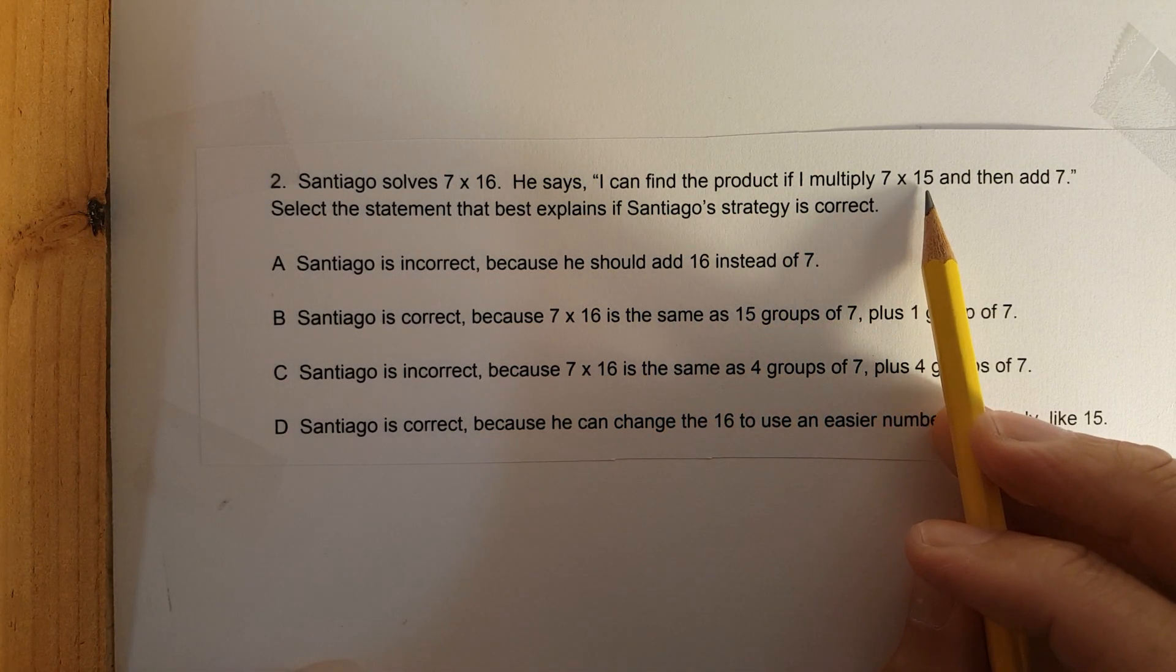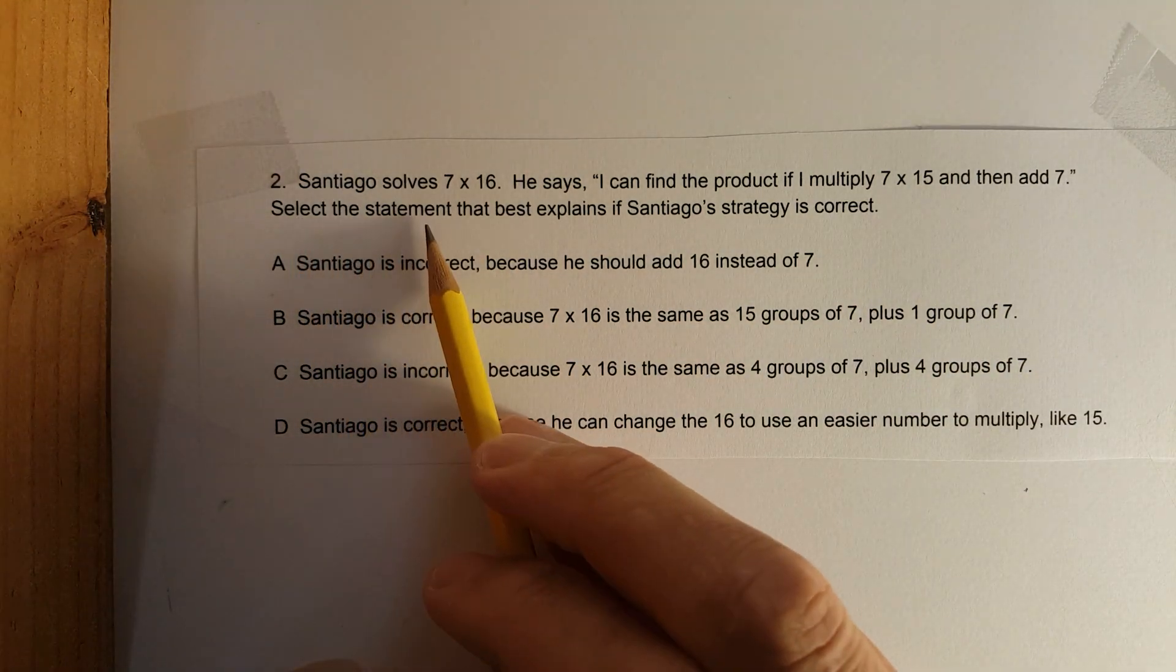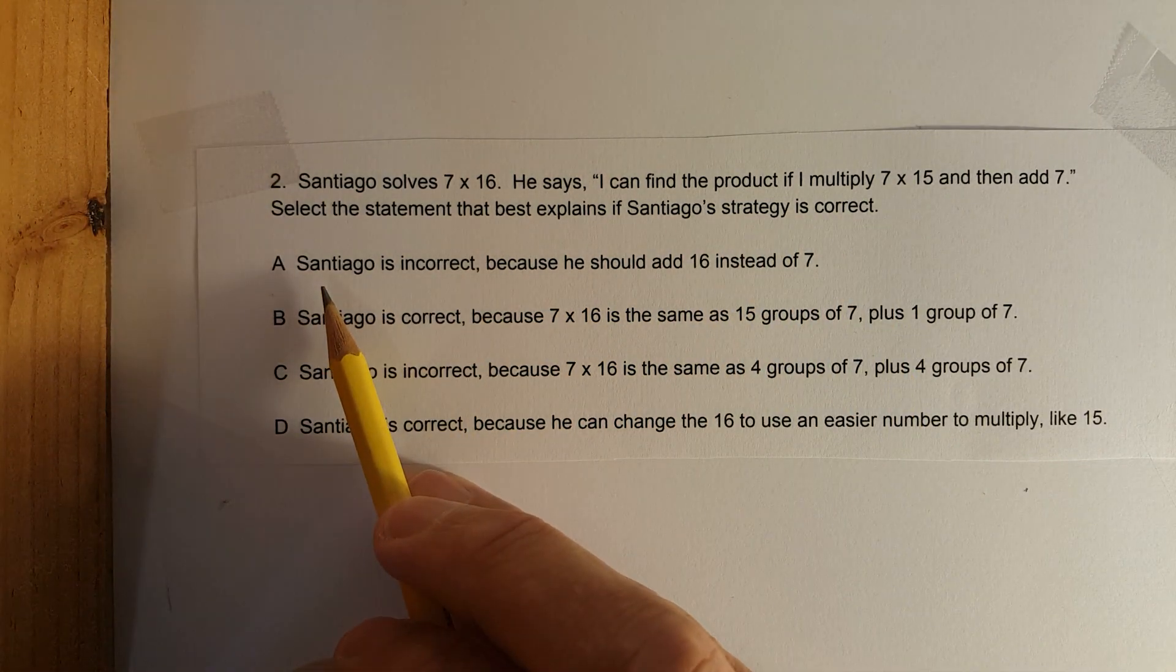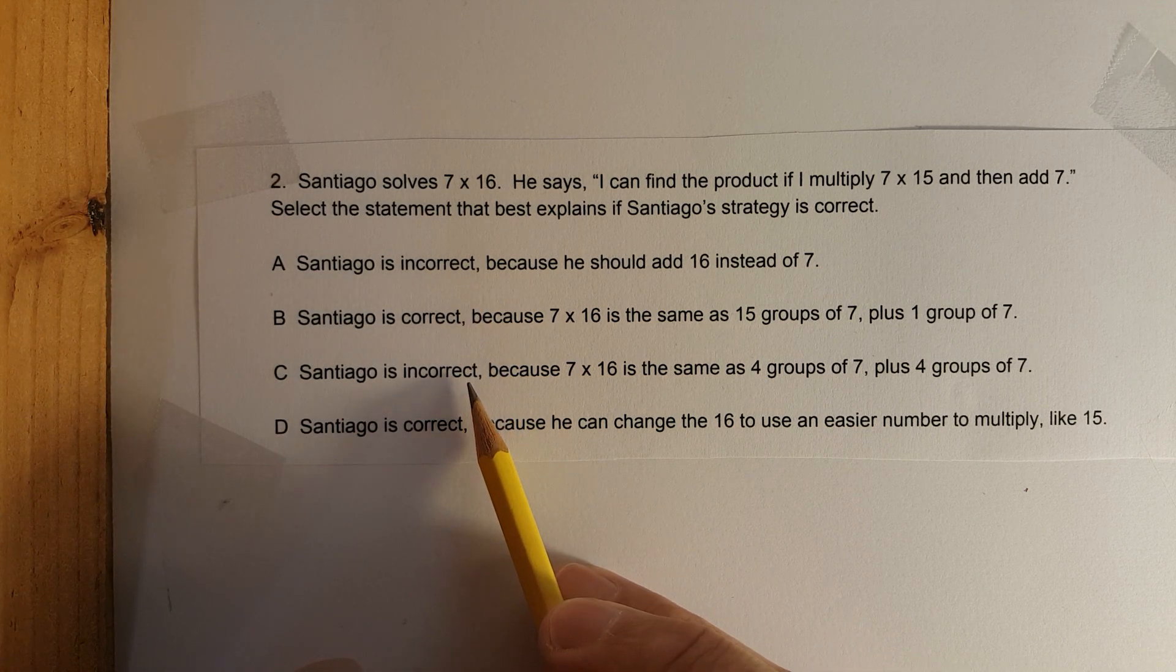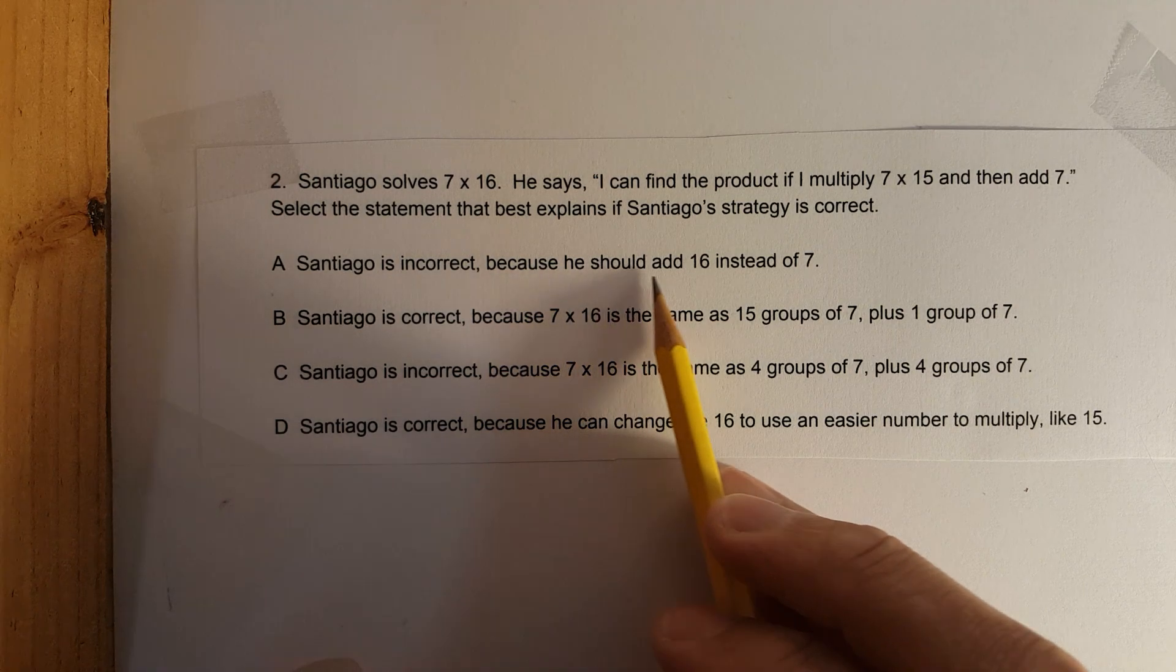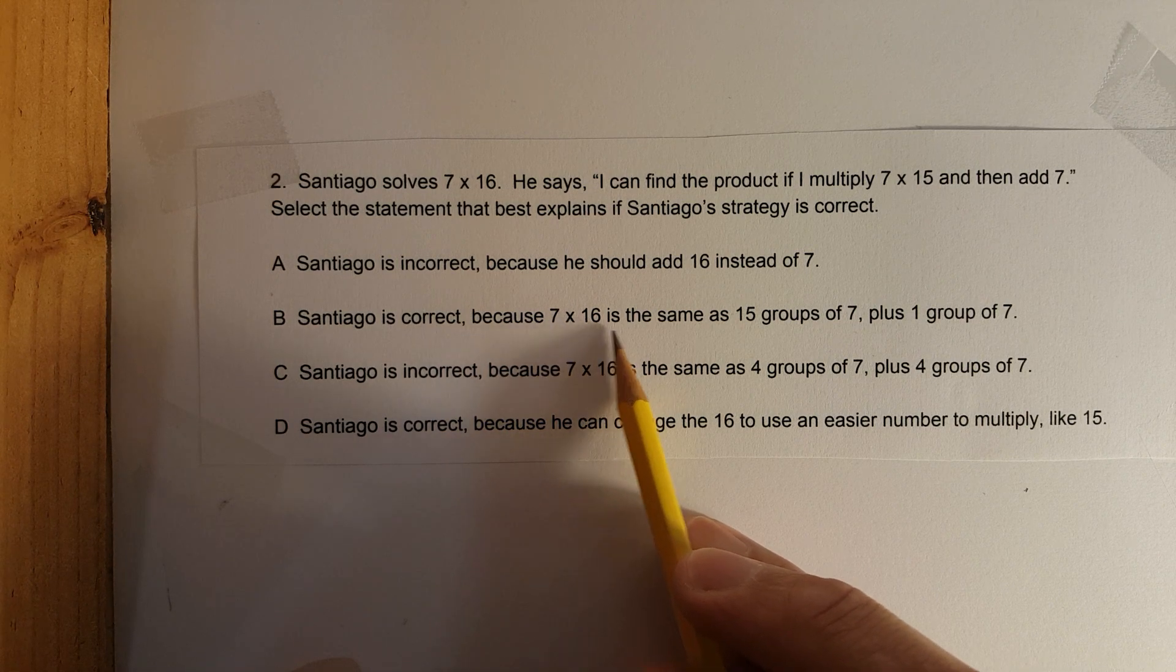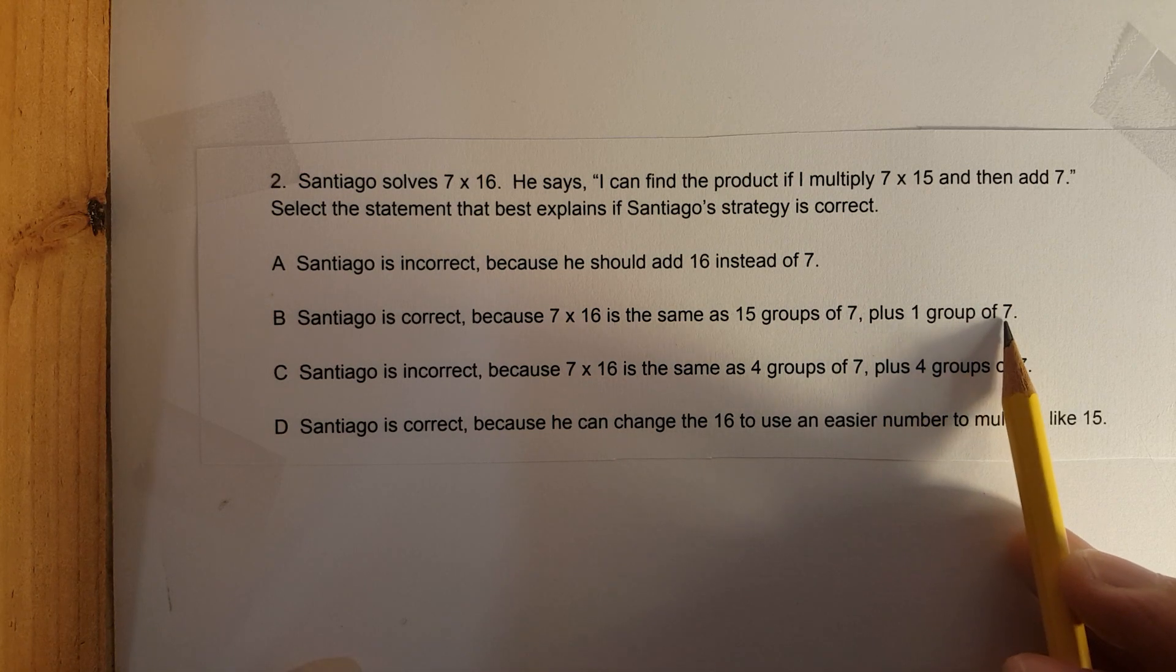Select the statement that best explains if Santiago's strategy is correct. Let's go through each choice. Santiago is incorrect, incorrect, correct, correct. Santiago is incorrect because he should add 16 instead of 7. Santiago is correct because 7 times 16 is the same as 15 groups of 7 plus 1 group of 7.